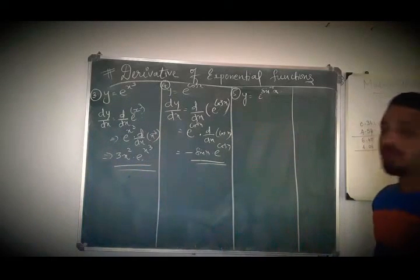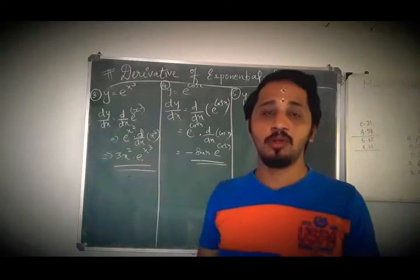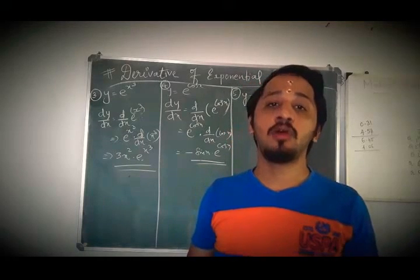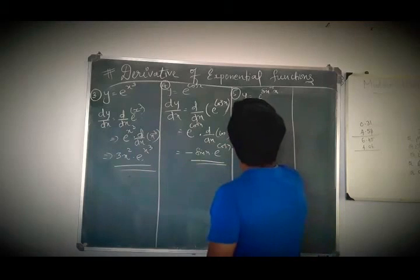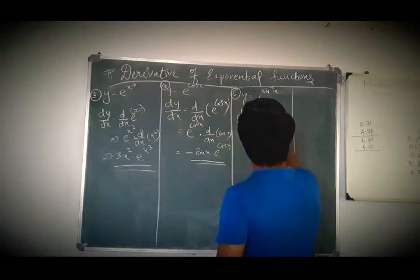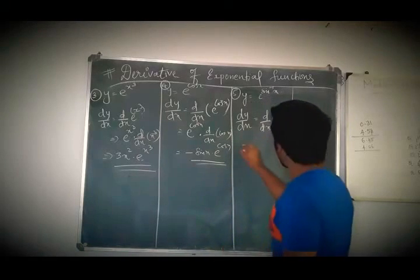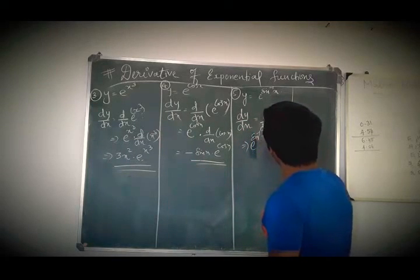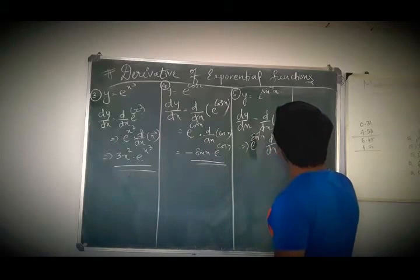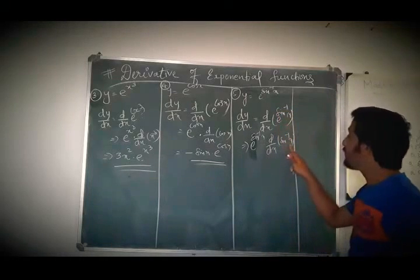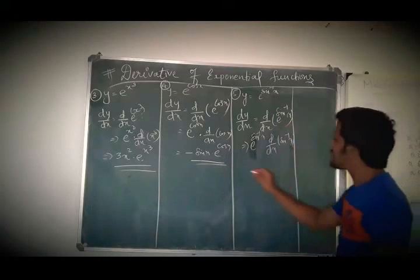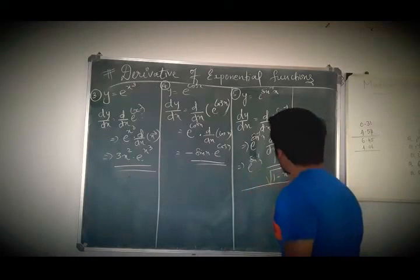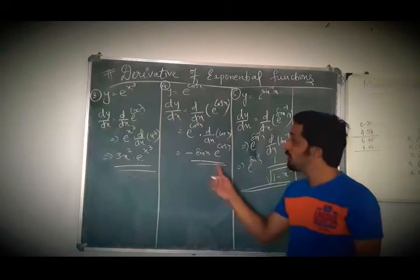Fifth question: y = e^(sin⁻¹x). You should know the derivative of sin⁻¹x, which is 1/√(1 − x²). So dy/dx = derivative of e^(sin⁻¹x) = e^(sin⁻¹x) into derivative of sin⁻¹x. In place of x I have sin⁻¹x, that is why I differentiate sin⁻¹x. So, dy/dx = e^(sin⁻¹x) · 1/√(1 − x²). Very important — go through this.